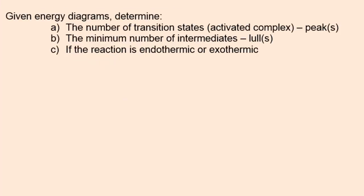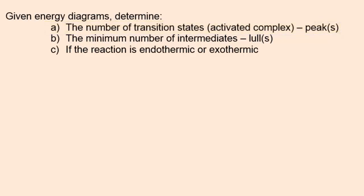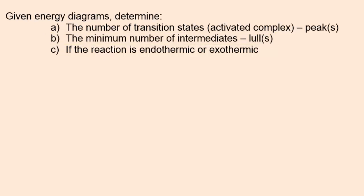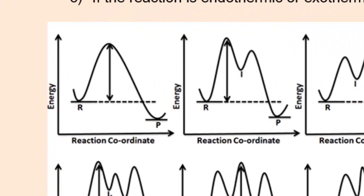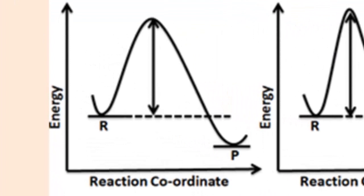Now we'll look at how energy diagrams relate to reaction mechanisms. The number of peaks in an energy diagram is indicative of the number of transition states, or activated complexes — the point where bonds are broken and made. The lulls, if any, indicate the number of intermediates. We determine if a reaction is endothermic or exothermic by comparing the energy of reactants and products. This first energy diagram shows an exothermic reaction with one peak — one activated complex — and no intermediates.